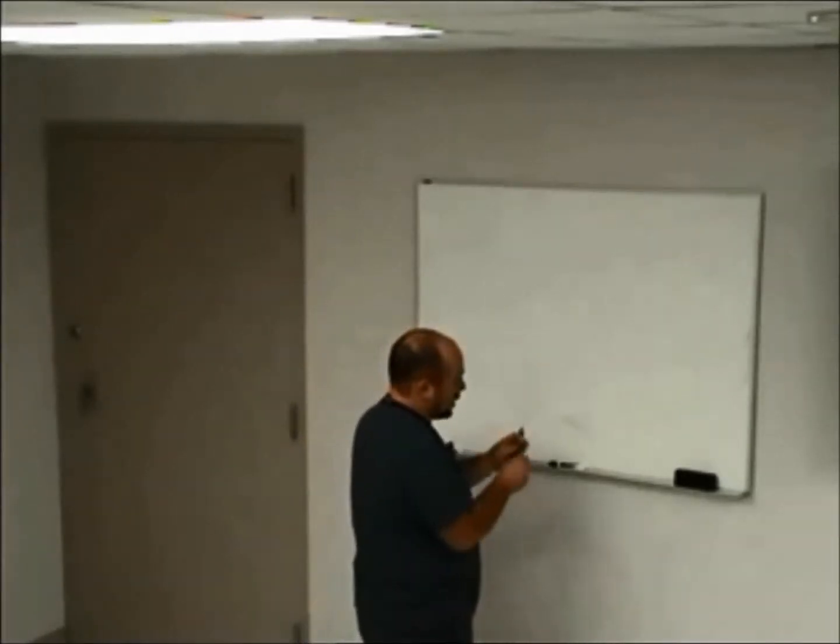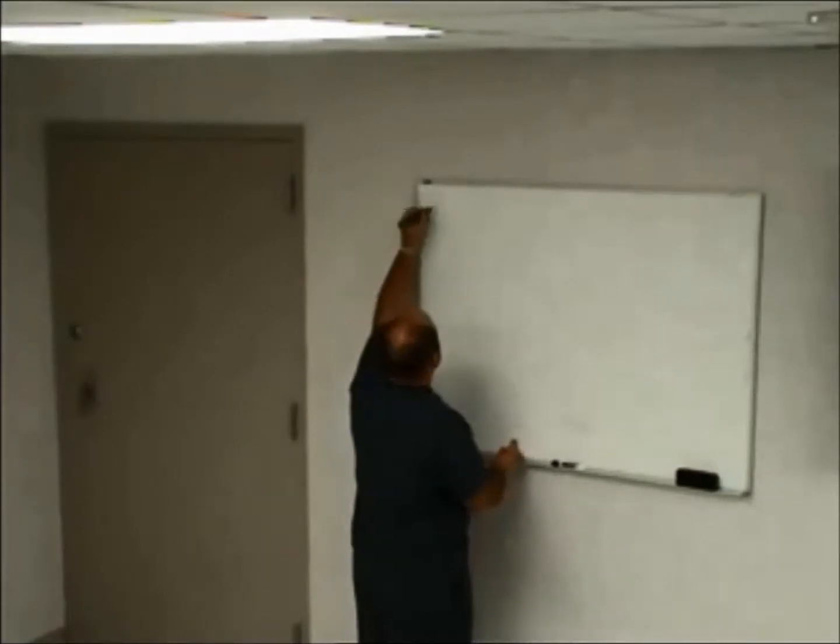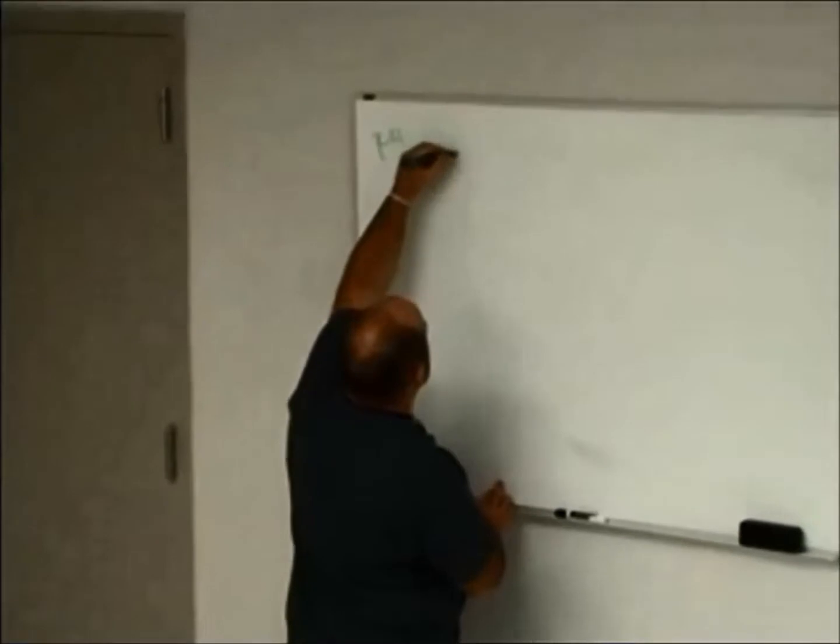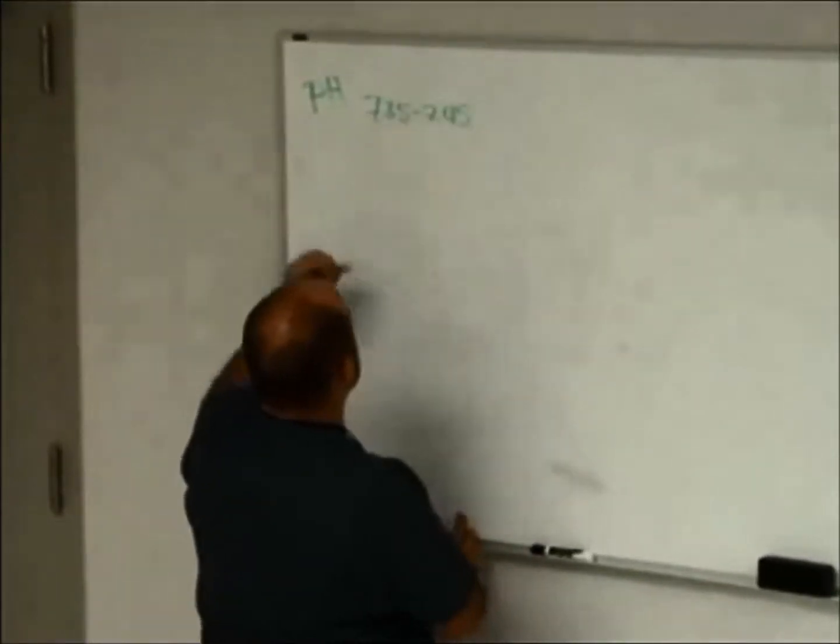So we'll start here with pH. Of course, we know normals on pH 7.35 to 7.45. Okay, that's pretty easy.